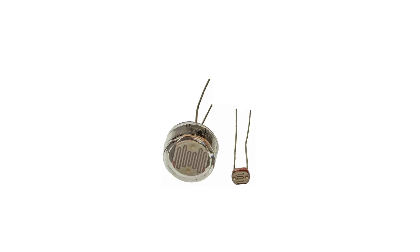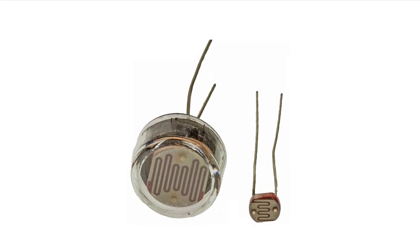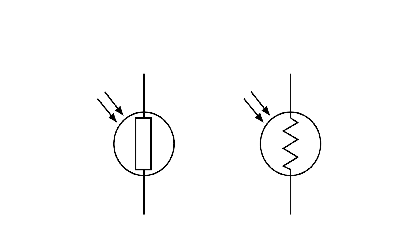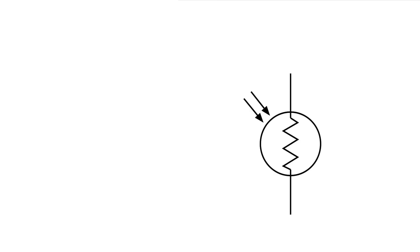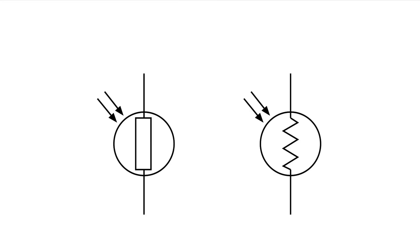You may see LDRs pop up in circuit designs from time to time. They have quite a unique circuit symbol, and there are two types you may see. The one with the rectangular resistor inside is the more standard one, although you'll also see them with the zigzag line fairly often.